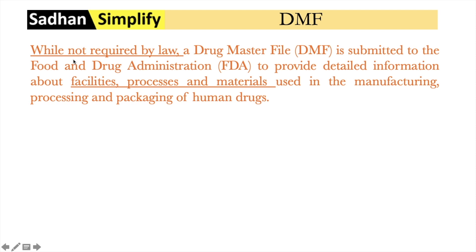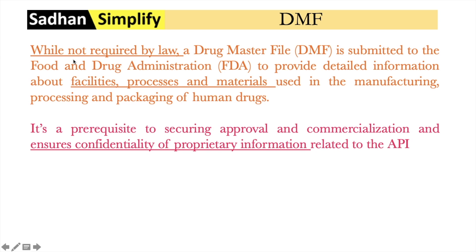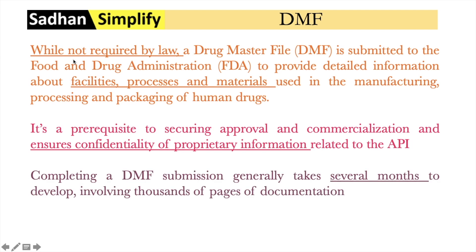Now let's talk about the DMF — Drug Master File. A Drug Master File is not a regulatory requirement; by law, it is not mandatory to obtain one. But it is basically a report provided to the U.S. Food and Drug Administration (FDA) by a CDMO. In this report, the company describes which facilities, processes, and materials will be used to manufacture, process, and package a human drug. The DMF is a very important, very detailed dossier, and it is a prerequisite to secure commercialization orders from innovator and big pharma companies. It takes at least 6, 10, or 12 months to complete since it is a thousand-page document.